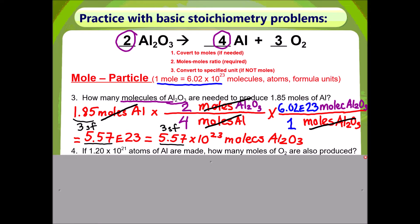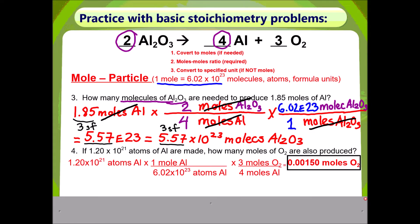Now pause the video and try problem 4 on your own. Welcome back. You should write down the given first — we don't have moles, therefore you will have to do Step 1 by getting rid of atoms and placing moles of aluminum on top. Step 2, which is always required, is the moles-to-moles ratio. The question asks for oxygen, therefore you will need to get rid of moles of aluminum by placing it on the bottom and placing moles of oxygen on top. Step 3: the question is asking for moles, therefore you can stop. Your answer, multiplying across the top and dividing by the bottom, turns out to be 0.00150 moles of O₂. Always check for the correct sig figs.